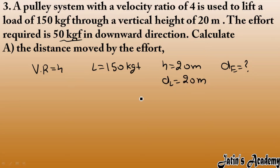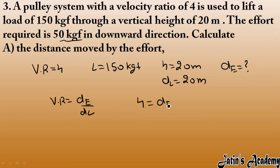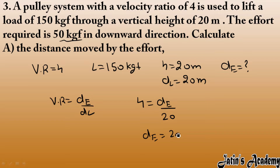We know that velocity ratio equals displacement of effort divided by displacement of load. Velocity ratio is 4, displacement of load is 20 m, so displacement of effort — that is, distance moved by effort — is 20 multiplied by 4, which equals 80 m. So the first answer is 80 m.